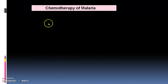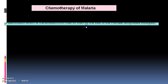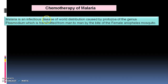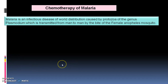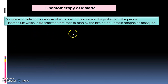Malaria is an infectious disease of worldwide distribution caused by the protozoa of the genus Plasmodium. It is transmitted from man to man by the bite of the female Anopheles mosquito.